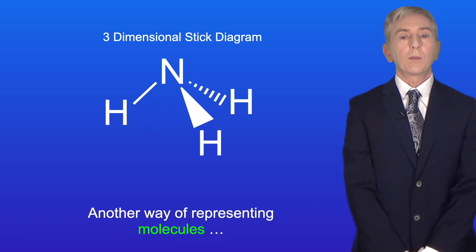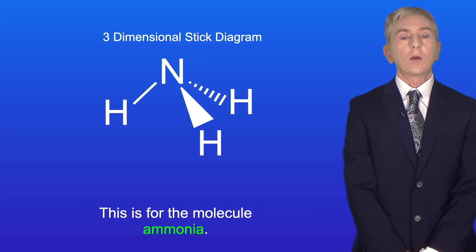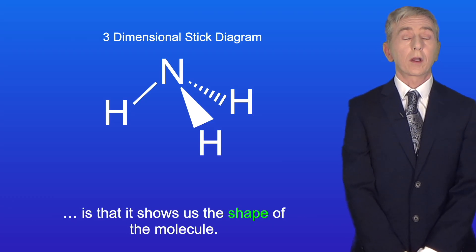Another way of representing molecules is to use a three-dimensional stick diagram like this one. This is for the molecule ammonia. The benefit of a three-dimensional stick diagram is that it shows us the shape of the molecule.